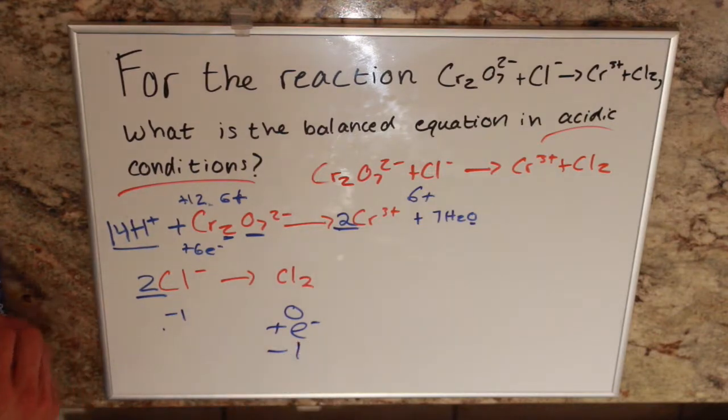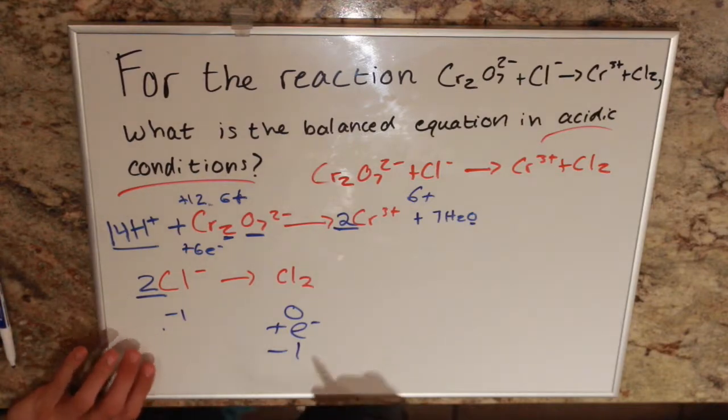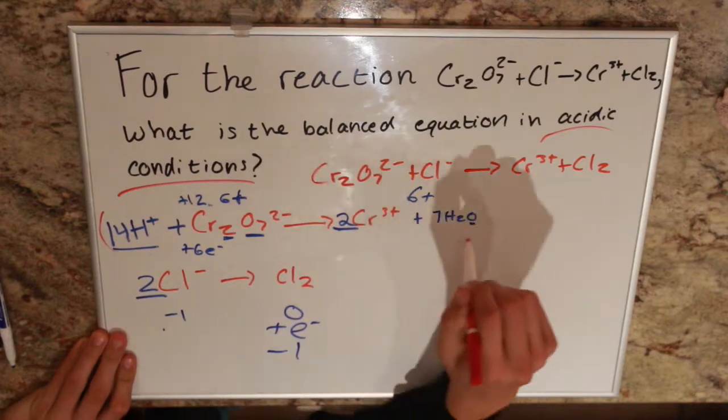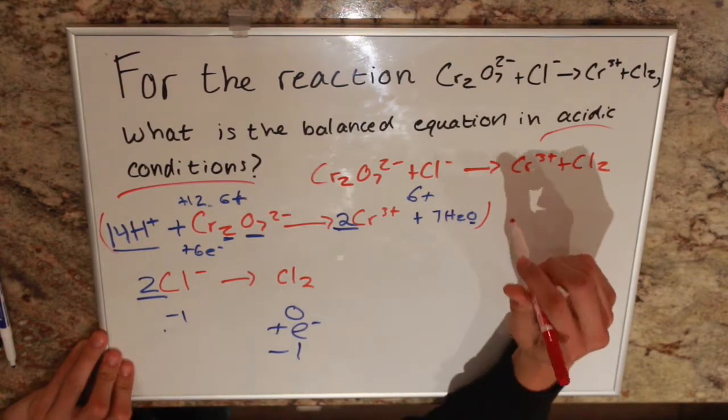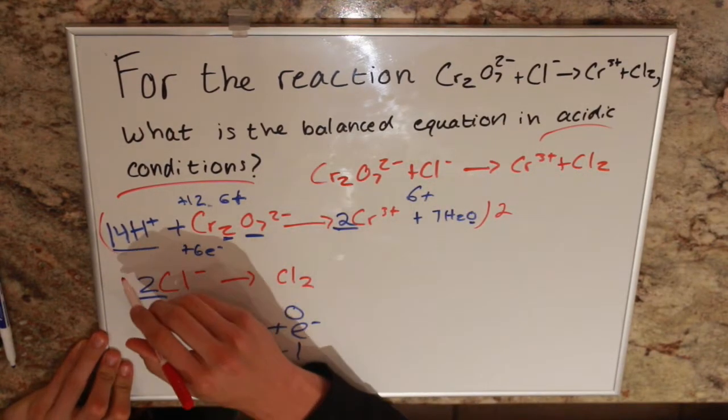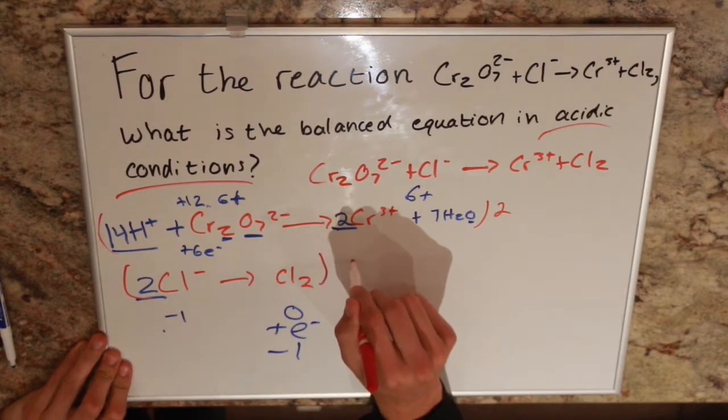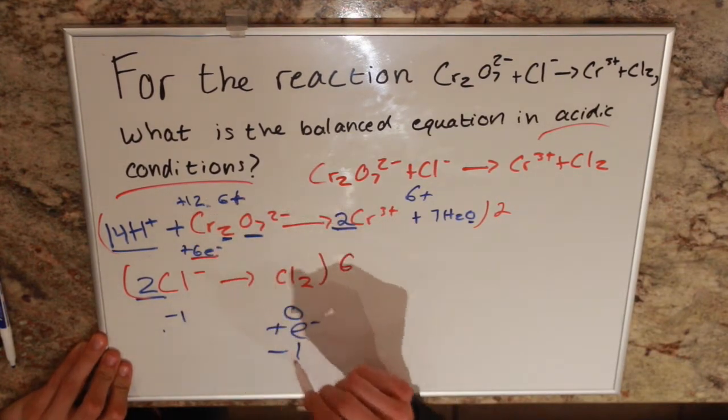Okay, so now we have all that sorted out. All we have to do is multiply this side by 2, multiply this one by 6, those are coming from these electrons.